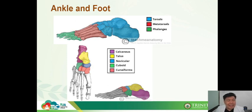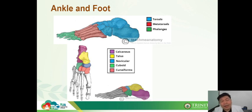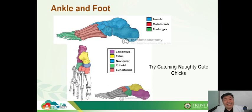Lastly, for the lower extremity, we have the ankle and foot. The blue represents your tarsals, the pink ones for metatarsals, and the green for your phalanges. There are many different bones in the tarsals, just as there are many in the carpals. To help remember them, here is a mnemonic: 'Try catching naughty cute chicks' — standing for talus, calcaneus, navicular, cuboid, and cuneiform.